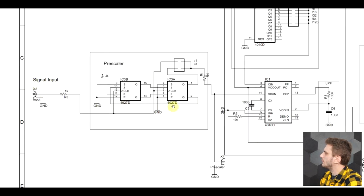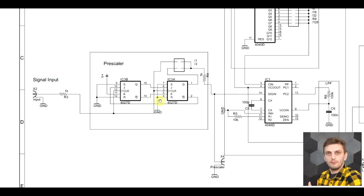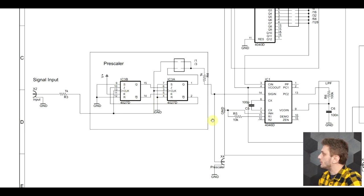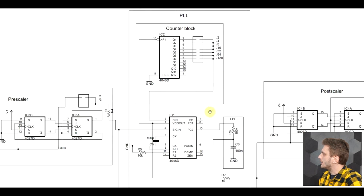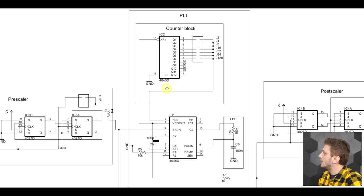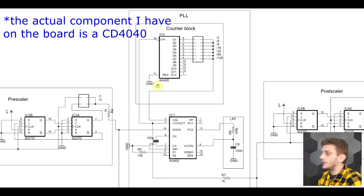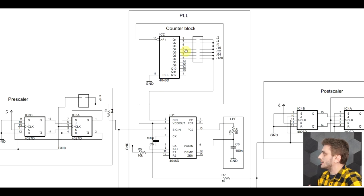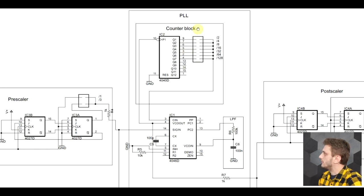The input signal goes into the pre-scaler or bypasses it via a jumper selection element. The pre-scaler is a simple divide-by-three counter built with dual JK flip-flops. In the PLL section, I'm using the CD4046 IC as the PLL, and the counter is a 74HC4040 counter circuit that can divide by powers of two — so 2, 4, 8, 16 and so on.